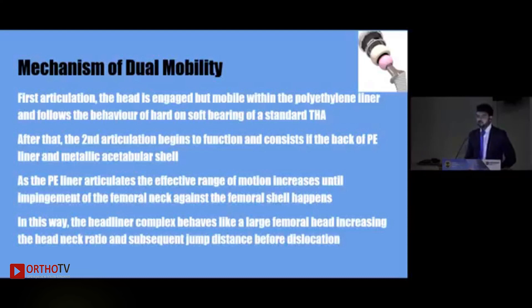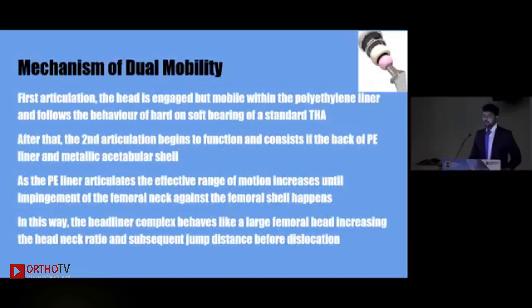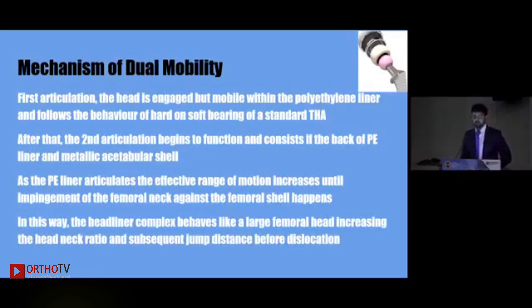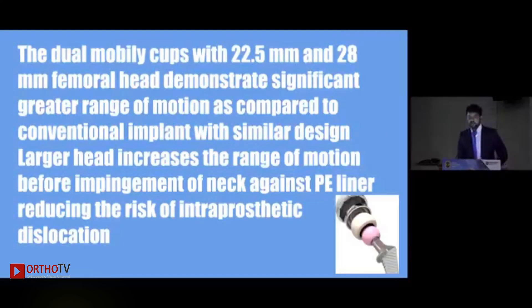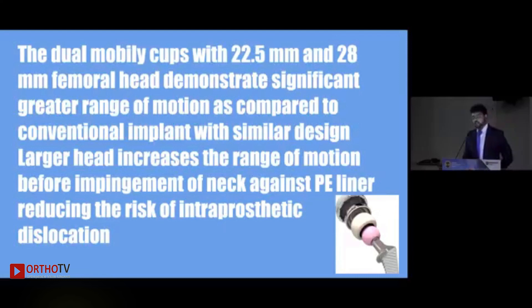The second articulation consists of the back of the polyethylene liner and the metal acetabular shell. As the polyethylene liner articulates, the effective range of motion increases until impingement of the femoral neck happens with the acetabular shell. In this way, the head-liner complex behaves as a larger head, allowing a greater degree of movement and an increase in the jump distance. In a dual mobility cup with a 22 mm head, this demonstrates significantly greater range of motion.